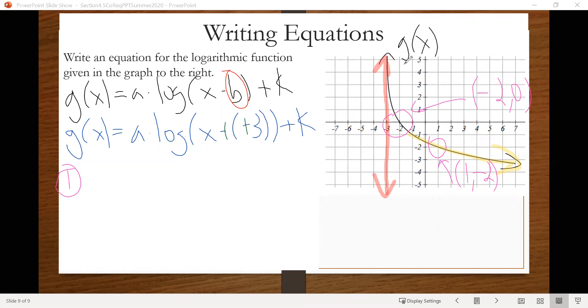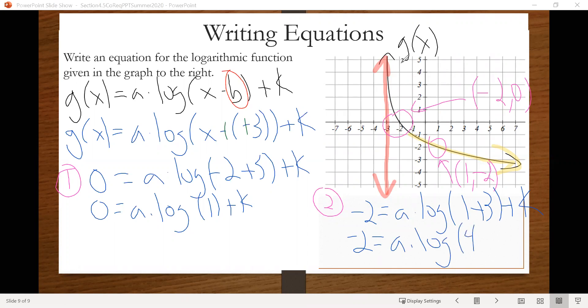So for the first one, using our 0 as our output, negative 2 as our input, we'll have 0 equals a times log of negative 2 plus 3 plus k. Which that one can simplify a bit to 0 equals a times log of 1 plus k. And then we will also set up using the other points. So negative 2 equals a times log of 1 plus 3 plus k, which is to become negative 2 equals a times log of 4 plus k.